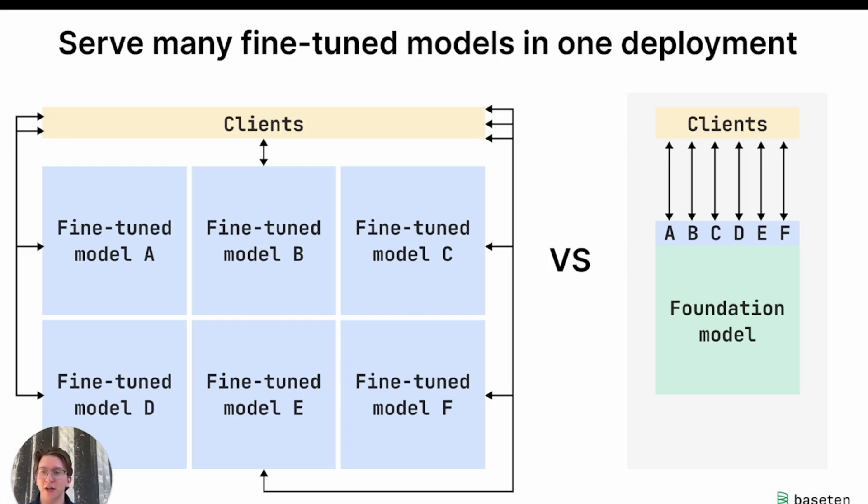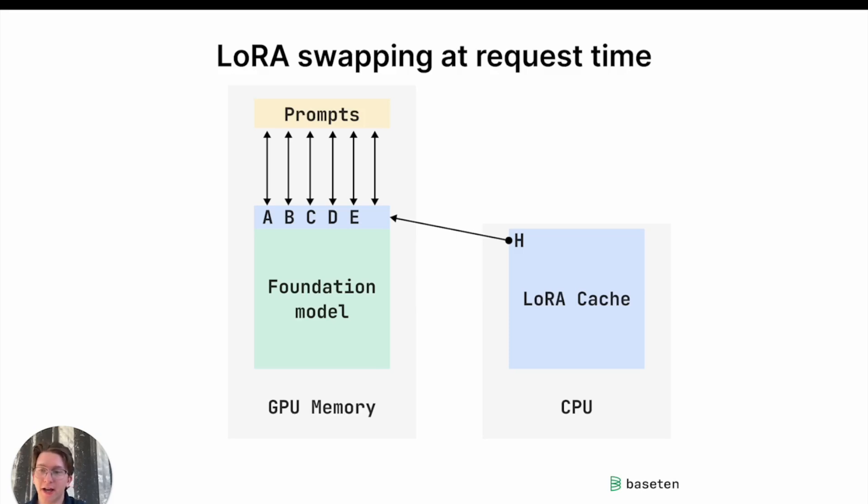We need places to keep the model weights, activations, the KV cache, the actual values during inference. And so because of that, when we want to scale up, we're actually going to keep a LoRa cache in our CPU memory, our host memory. So that's the RAM on the CPU that's attached to the GPU in the model serving instance.